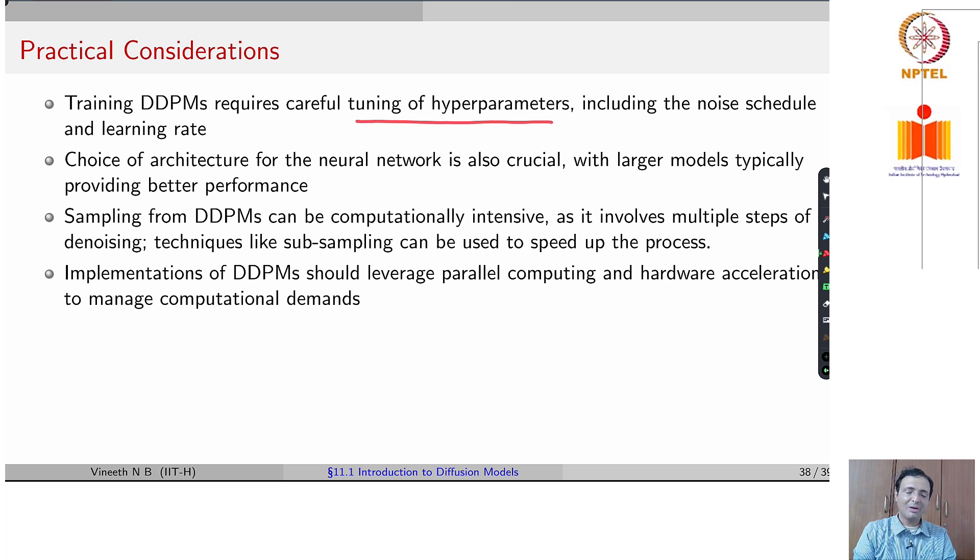Sampling from DDPMs can be inherently computationally intensive because you have to take a sample from a noise and keep denoising over multiple iterations before you get your original data distribution sample. And this can be time taking and using techniques like subsampling or coarse to fine sampling can be used to speed up this process. At the end of the day, implementations of DDPMs should benefit from parallelizing and hardware acceleration to improve their computational footprint.